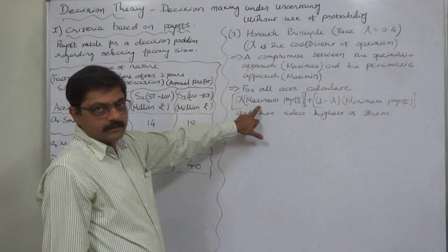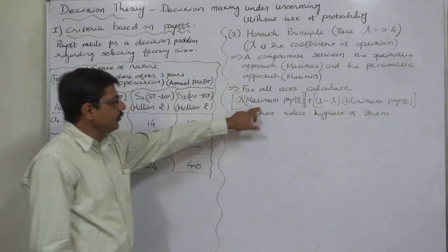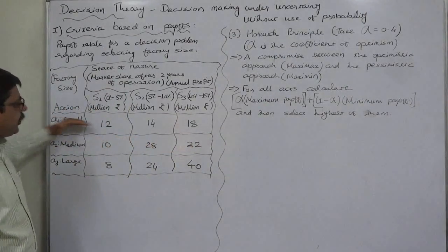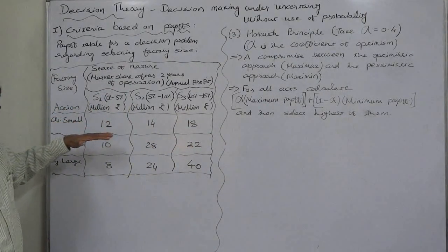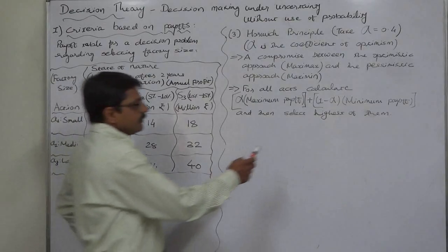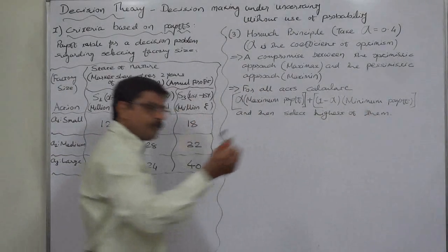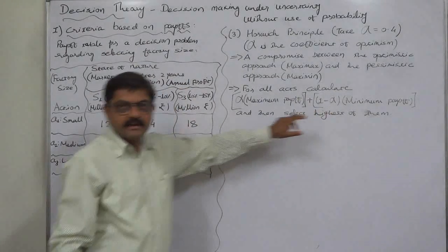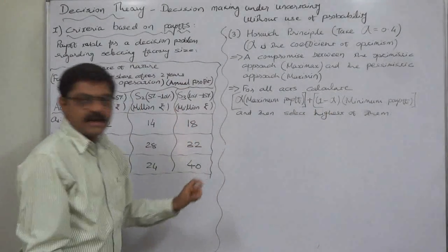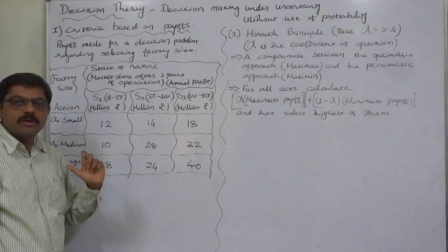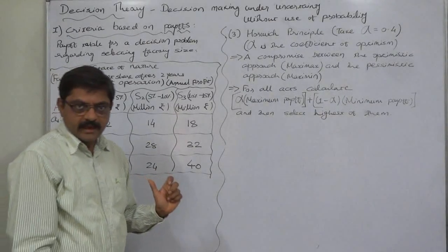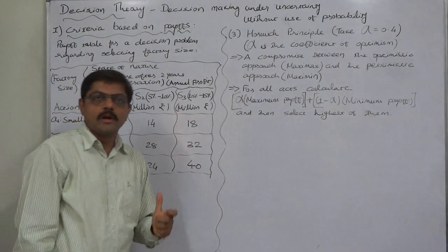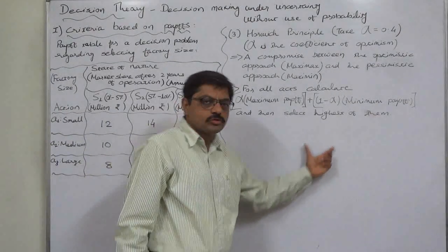In the first step, we apply this formula. Alpha is multiplied by the maximum payoff of an action, and then the minimum payoff of the same action is multiplied by 1 minus alpha, and the two results are added.